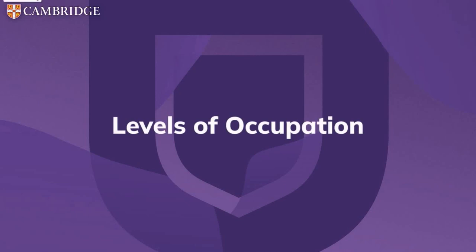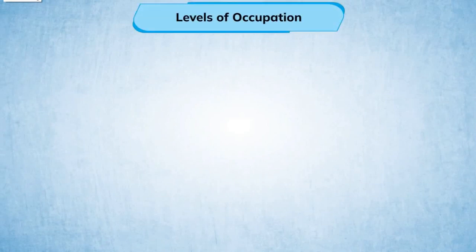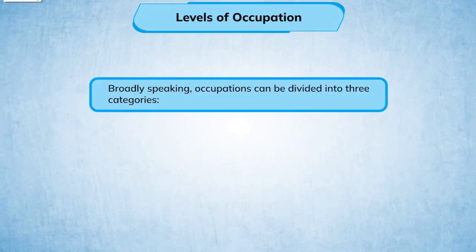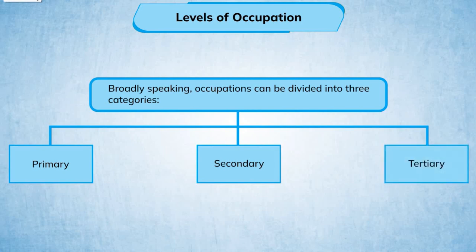Levels of occupation. Broadly speaking, occupations can be divided into three categories: Primary, Secondary, and Tertiary.